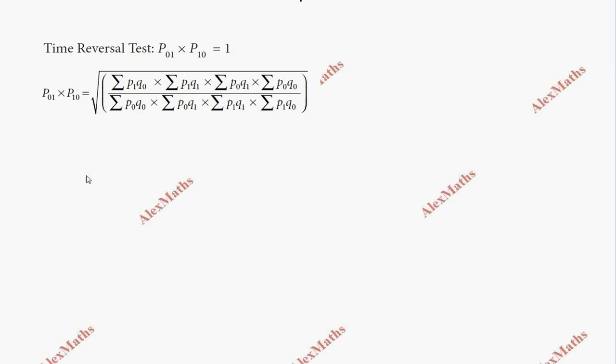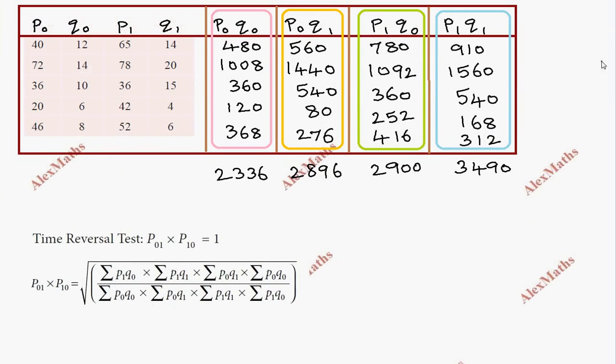Now for the Time Reversal Test, P₀₁ times P₁₀ should equal 1. Substituting into the formula: the square root of (Σ P₁Q₀ times Σ P₁Q₁ divided by Σ P₀Q₁ times Σ P₀Q₀) times (Σ P₀Q₀ times Σ P₀Q₁ divided by Σ P₁Q₁ times Σ P₁Q₀).